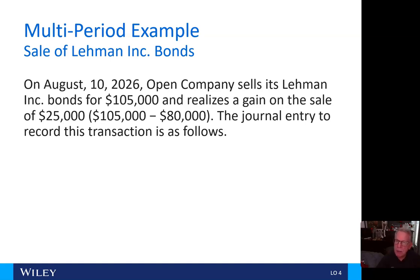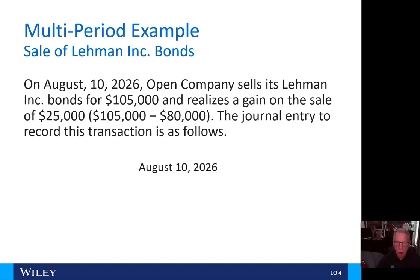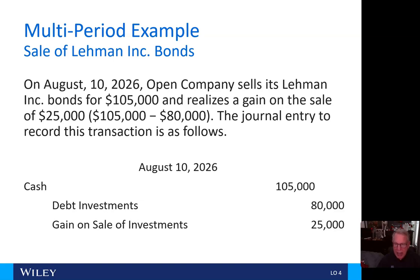On August 10, 2026, Open Company sells its Layman Incorporated bonds for $105,000 and realizes a gain on the sale of $25,000 — the difference between $105,000 and $80,000. The journal entry to record this transaction is: debit cash $105,000, credit debt investments $80,000, and credit gain on sale of investments $25,000.